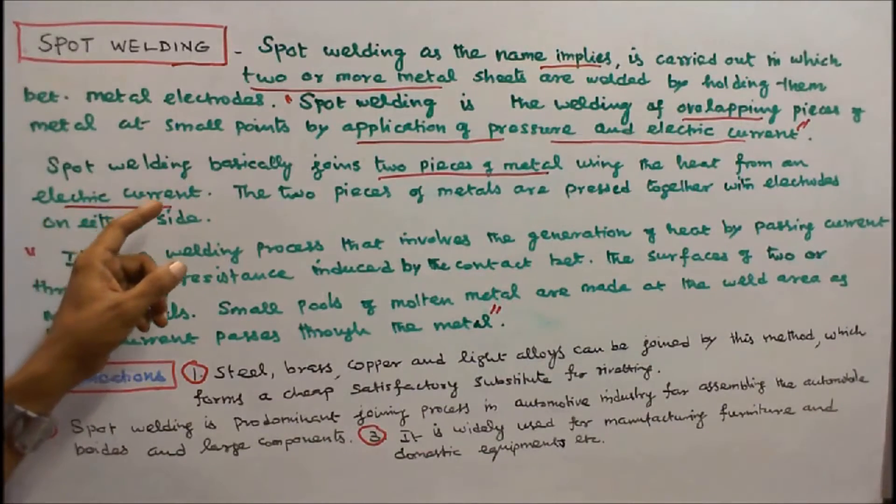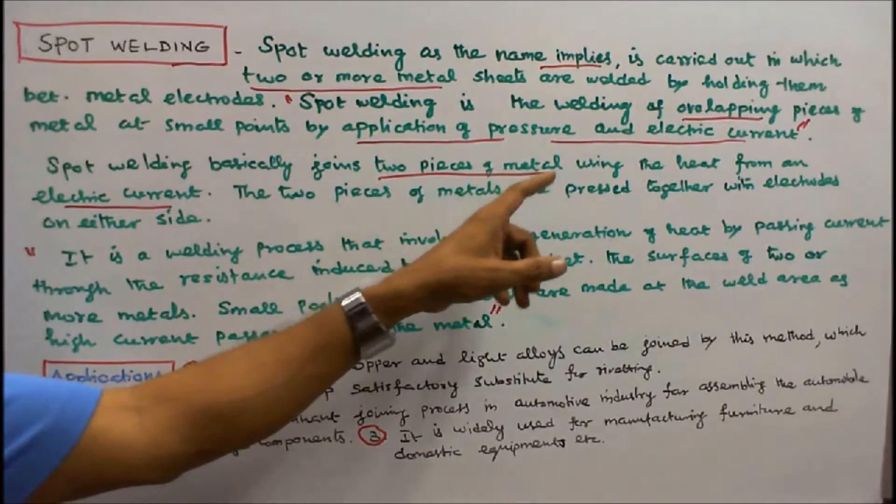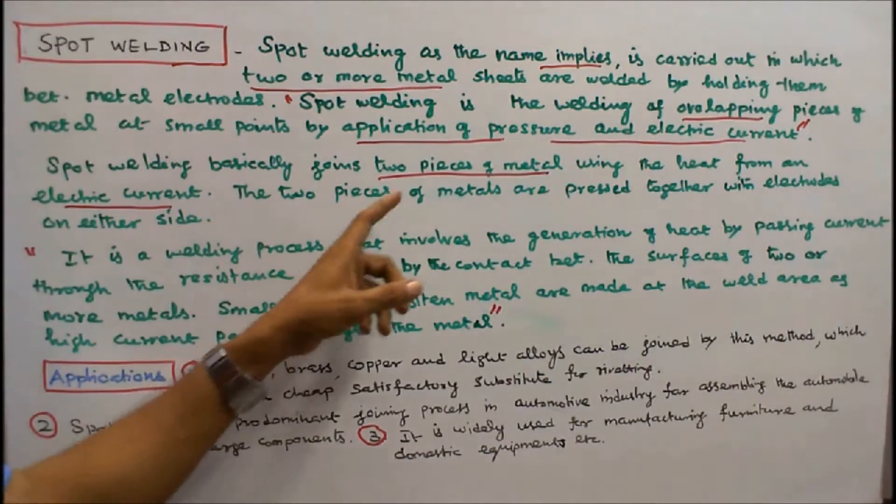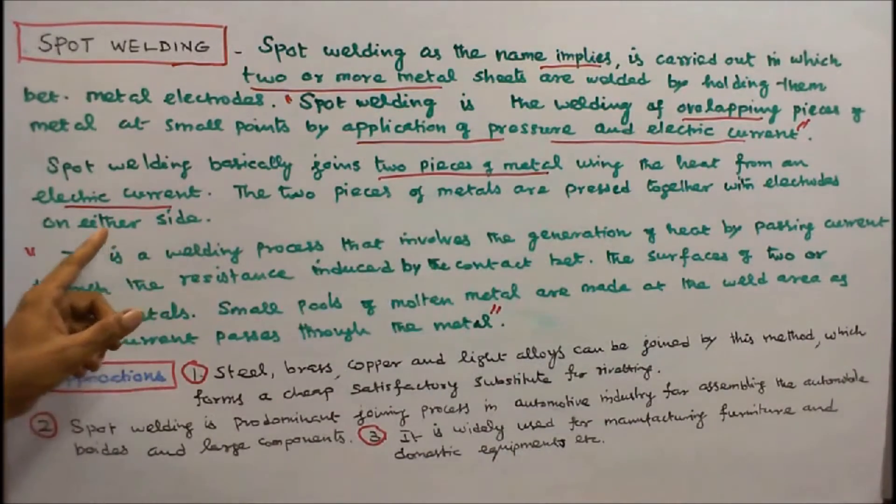Spot welding basically joins two pieces of metal using the heat from an electric current. The two pieces of metals are pressed together with electrodes on either side.